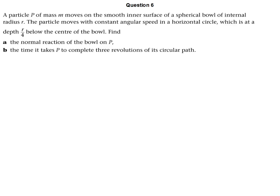Here is the sixth of our harder circular motion questions. This one is quite similar to one that we looked at a little earlier, in that there's no diagram, so we'll have to read the question carefully to figure out what type of circular motion is involved. As we look through it, we can see that it is a horizontal circular motion question, and that our particle is moving around the inside of a spherical bowl.